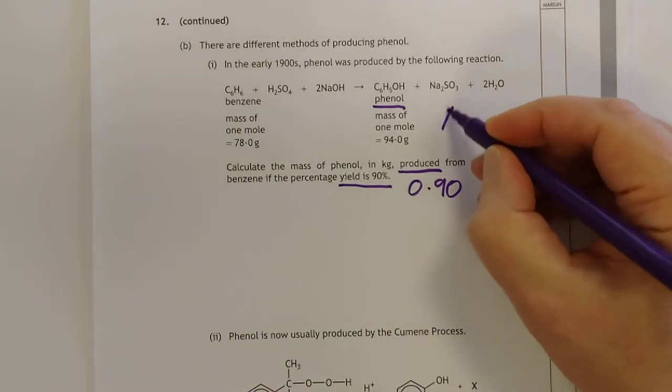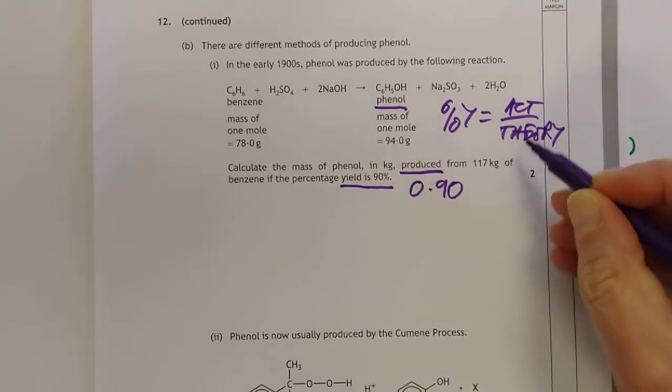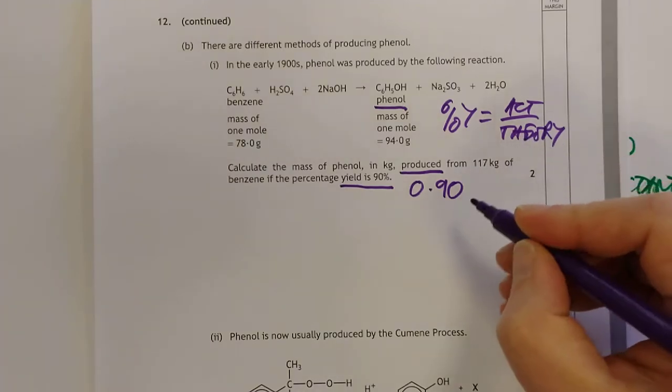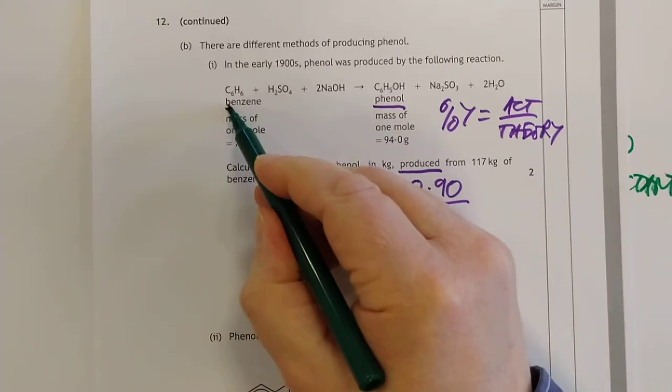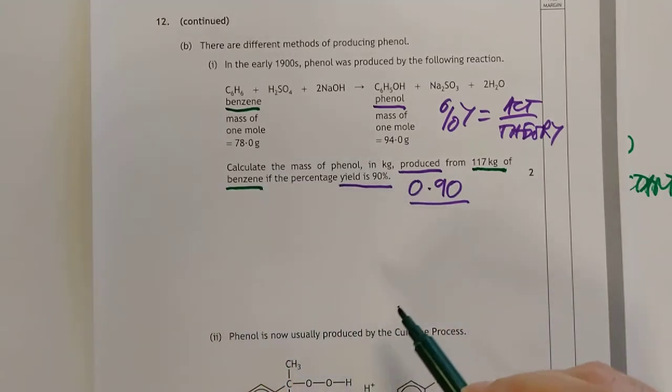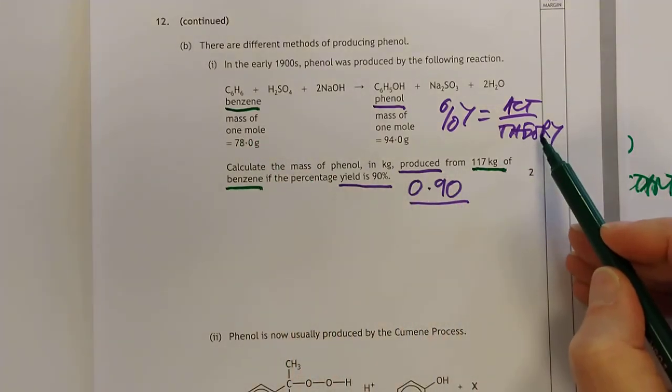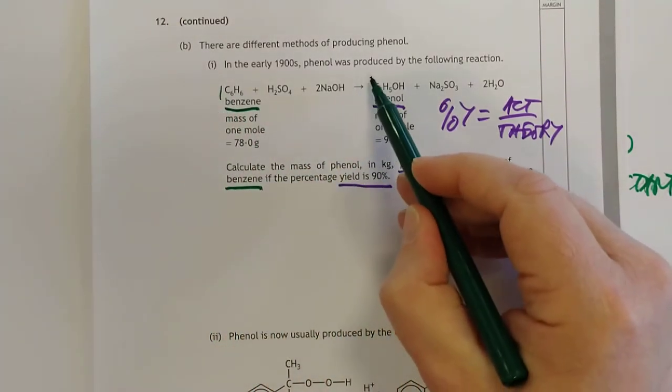So that's our percentage yield. Percentage yield equals actual over theory. This time we're solving for actual. So we need percentage yield times theory. That's grand, we're halfway there already. 0.9 is percentage yield. Let's have a look at how to work out how much we should have made theoretically.